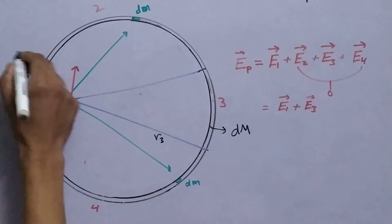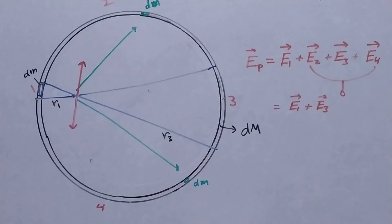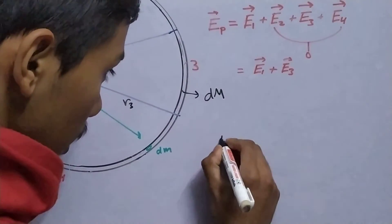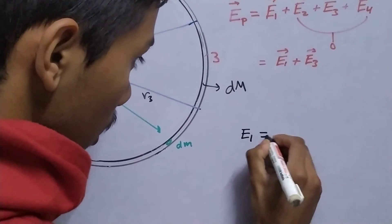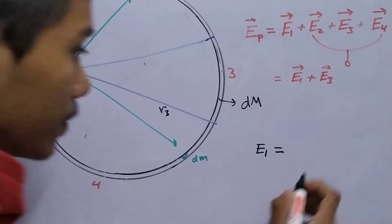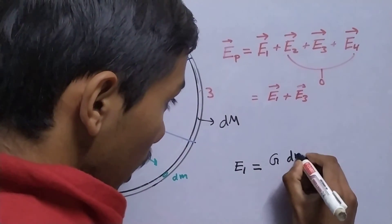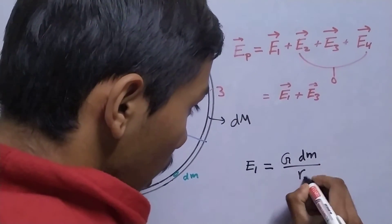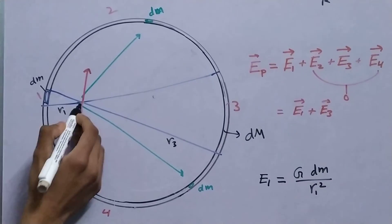Now the field due to this dm, this small one, e1, its magnitude will be g dm upon r1 square, and it's in this direction.